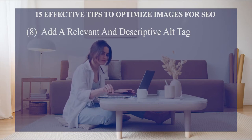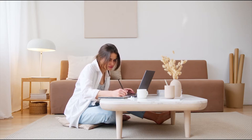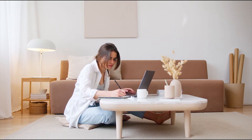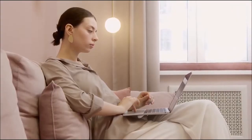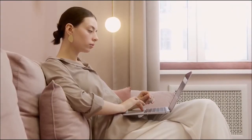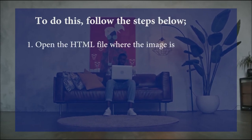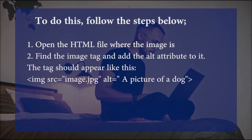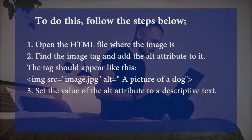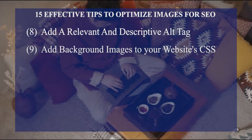Tip eight: add a relevant and descriptive alt tag. Alt tags are text alternatives to images that improve accessibility for visually impaired users and improve search engine indexing. These texts should be at most 150 characters. To add one, open the HTML file, find the image tag, and add the alt attribute with a descriptive text value.